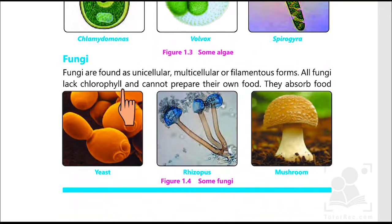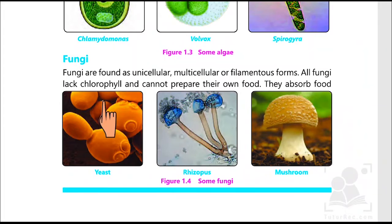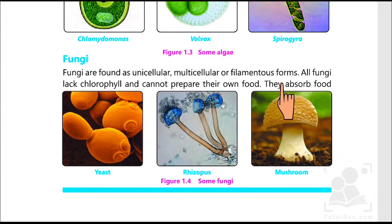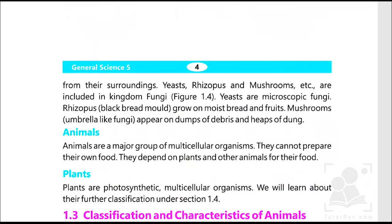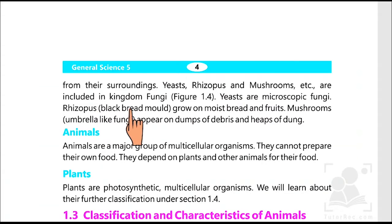Fungi are found as unicellular, multicellular, or filamentous forms. All fungi lack chlorophyll and cannot prepare their own food. However, they absorb food. Yeast, Rhizopus, and mushrooms are included in kingdom Fungi.